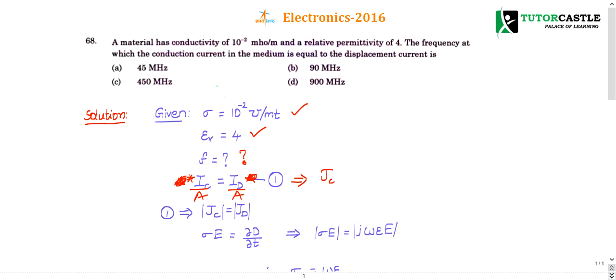What can I write? He has given that jc is equal to jd. When jc is equal to jd, what is the frequency of operation is asking? And he has given conductivity of the material and relative permittivity of the material.